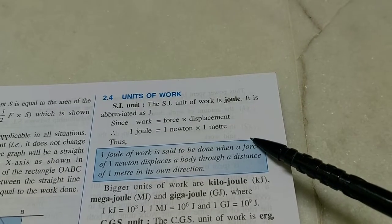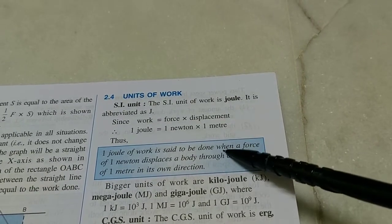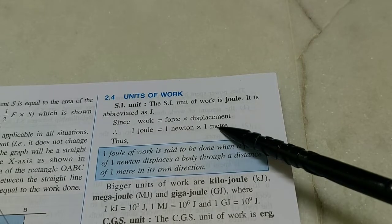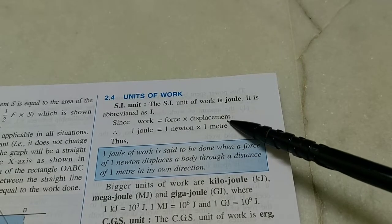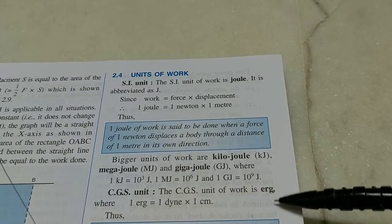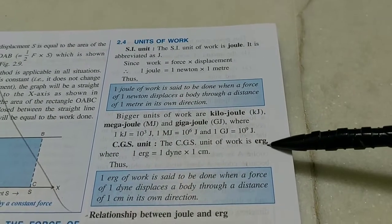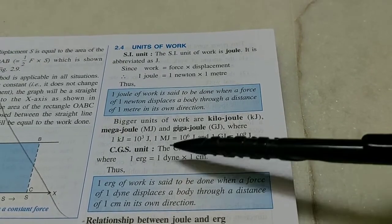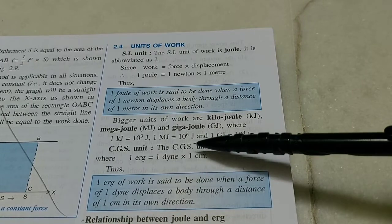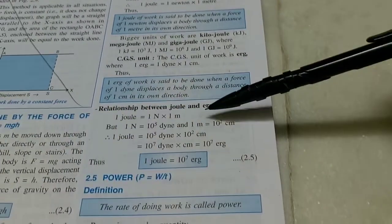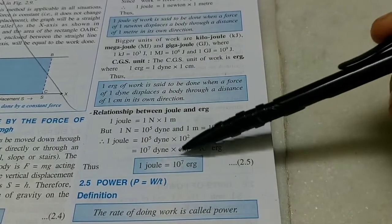The SI unit of work is joule — the work done when a force of 1 newton produces a displacement of 1 meter in the direction of force. Bigger units include kilojoule, megajoule, and gigajoule. A smaller CGS unit is erg: 1 erg is the work done when 1 dyne of force displaces an object by 1 cm in the direction of force. The relationship is: 1 joule = 10⁷ erg.